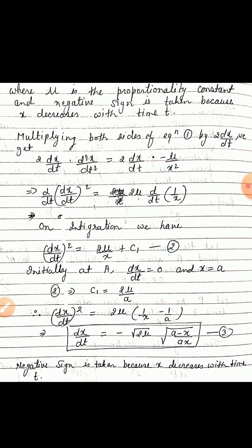Removing the proportionality sign and introducing a proportionality constant, we get d²x/dt² = −μ/x², take it as equation 1. Here μ is the proportionality constant and the negative sign is because x decreases with time t. Multiplying both sides of equation 1 by 2(dx/dt), and applying the property of differentiation, this can be written as d/dt of (dx/dt)² = 2μ/x plus an integration constant c₁, give it as equation 2.